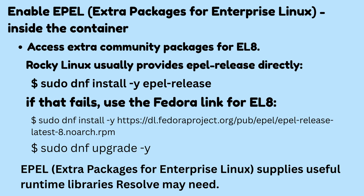Enable EPEL — extra packages for enterprise Linux — inside the container to access extra community packages for enterprise Linux 8. Rocky Linux usually provides epel-release directly, so run: sudo dnf install -y epel-release. If that fails, use the Fedora link for enterprise Linux 8, then run: sudo dnf upgrade -y.